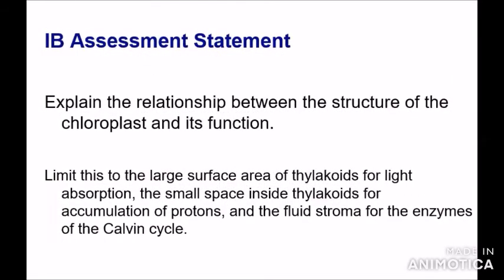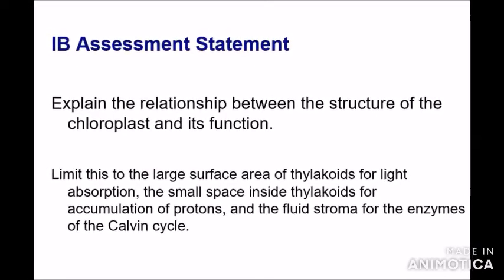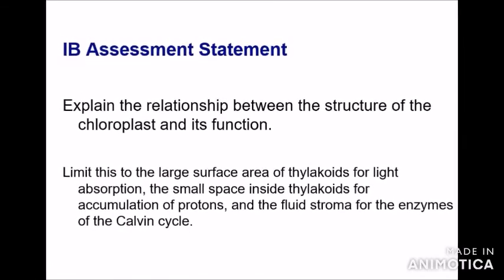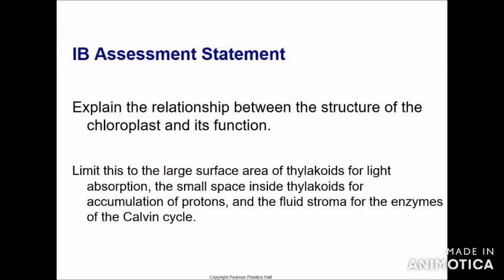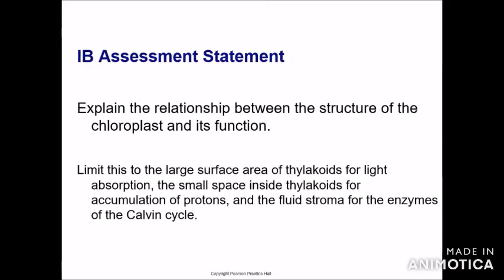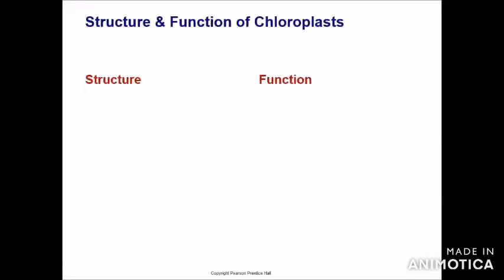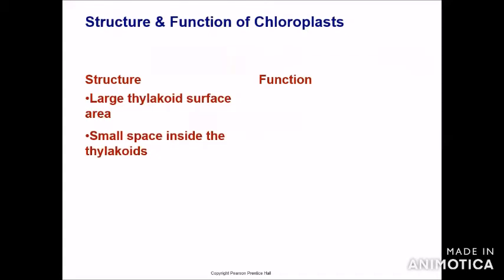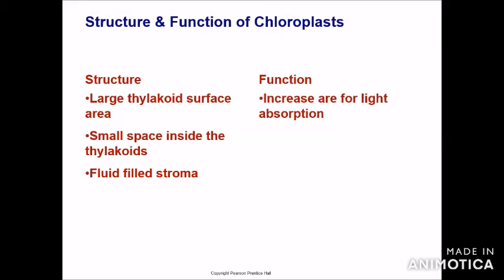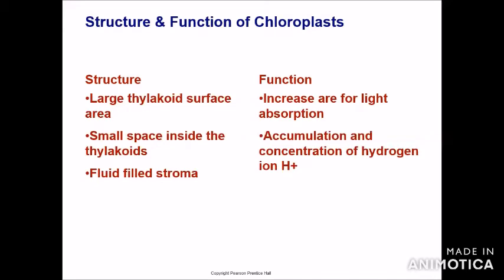The next assessment statement: explain the relationship between the structure of the chloroplast and its function, limited to: the large surface area of thylakoids for light absorption, the small space inside the thylakoids for accumulation of protons, and the fluid stroma for enzymes of the Calvin cycle. Large thylakoid surface area increases the absorption surface. The small space inside the thylakoids allows accumulation of hydrogen ions. The fluid-filled stroma contains enzymes for the Calvin cycle.